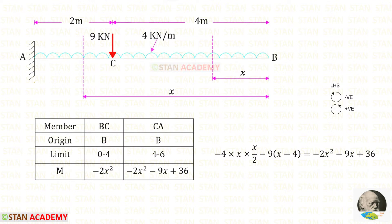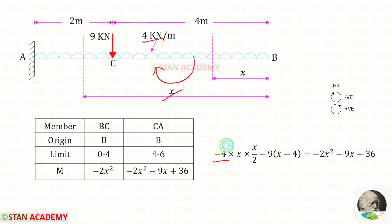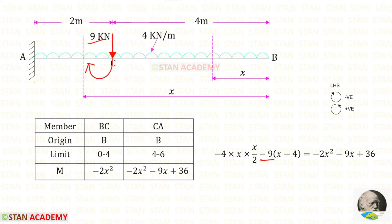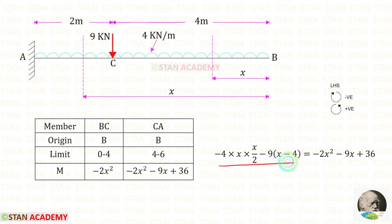Now let us find the moment in section CA. Up to this section we have both the UDL and the point load. The UDL acts in the clockwise direction so it is negative, and we multiply by distance and distance divided by 2. The point load also acts in the clockwise direction, so it is negative, and its moment arm distance is X minus 4. After simplification we get the expression for M in CA.